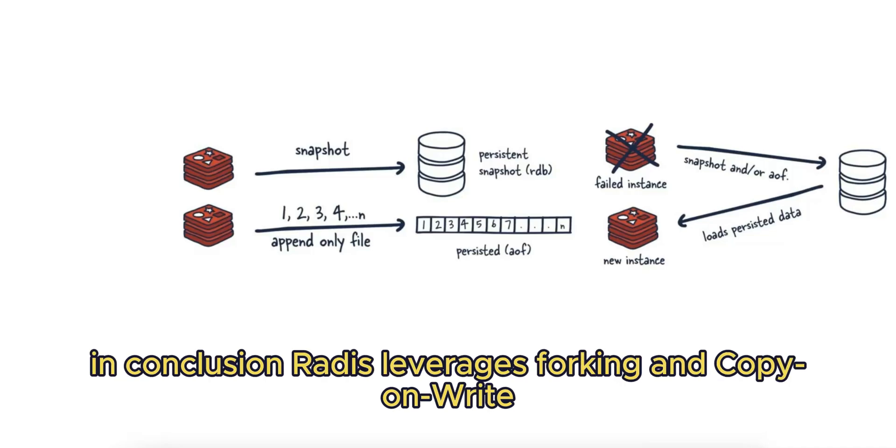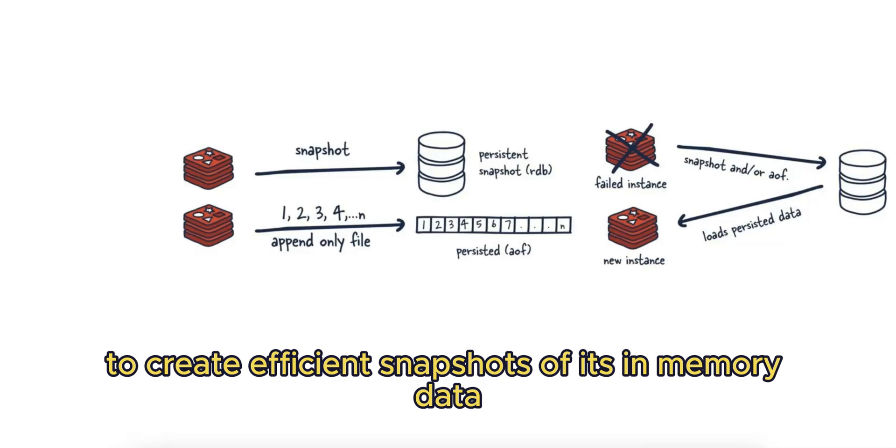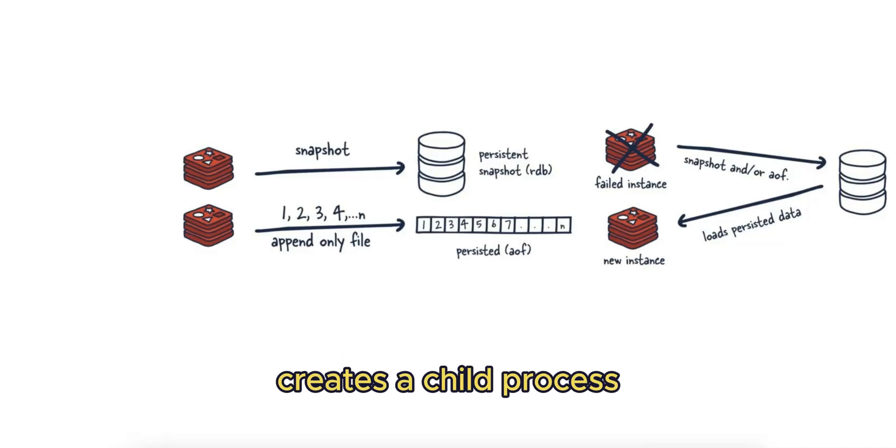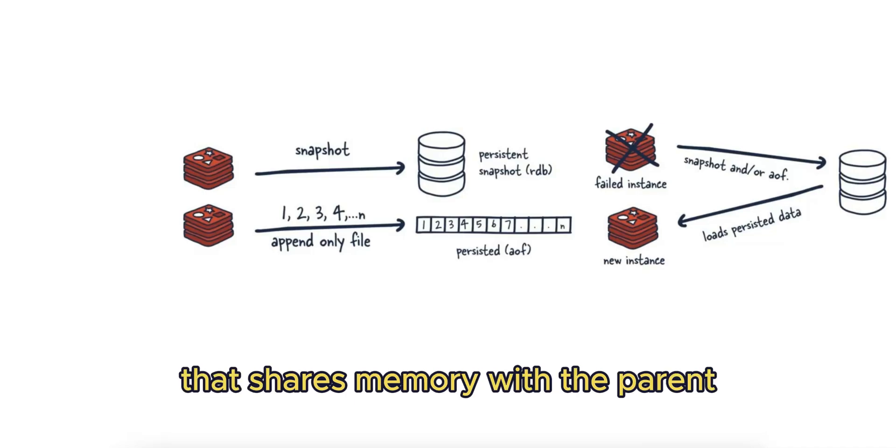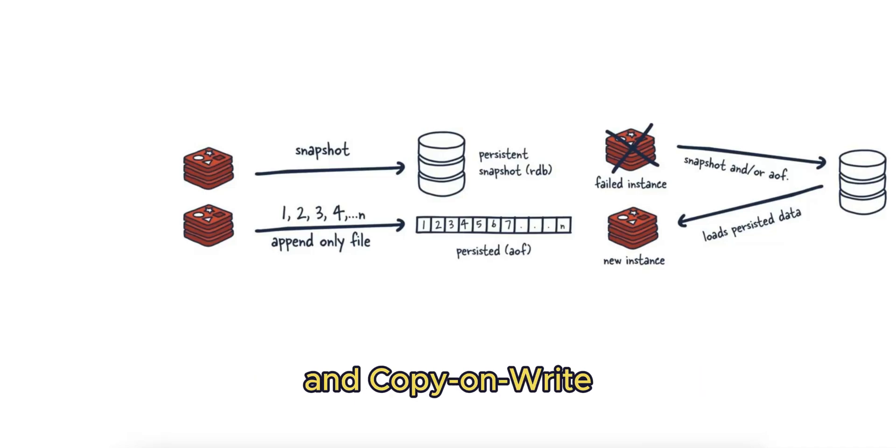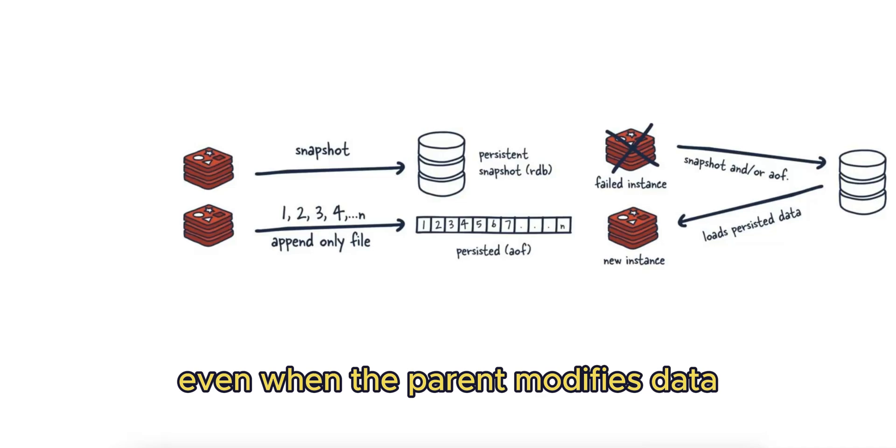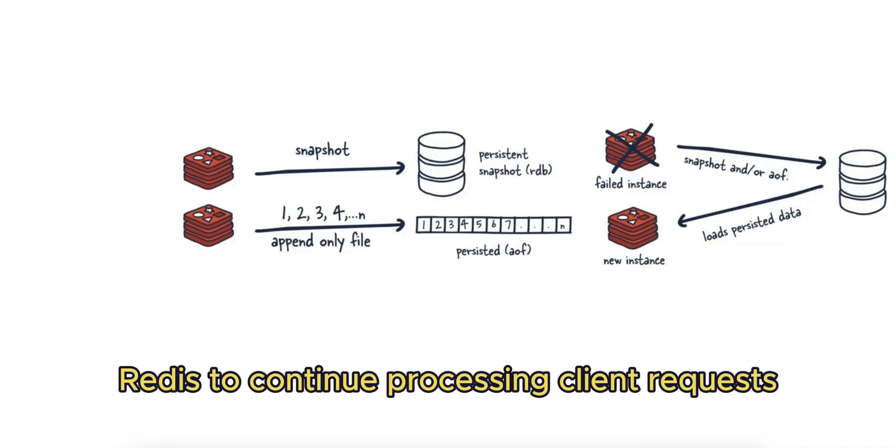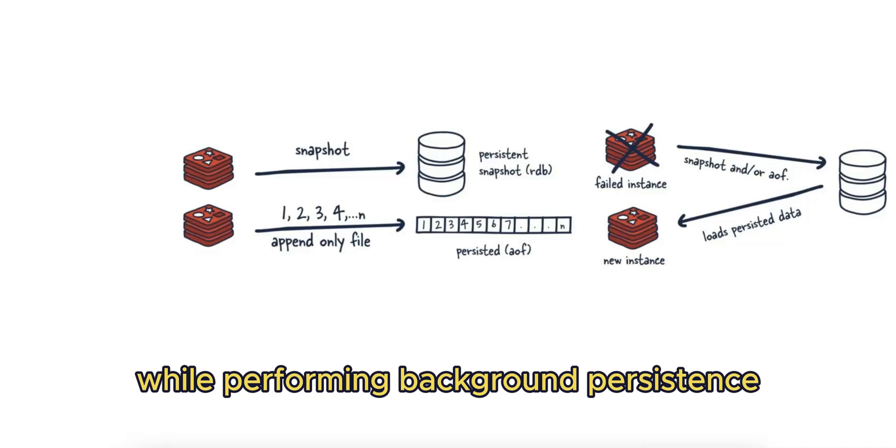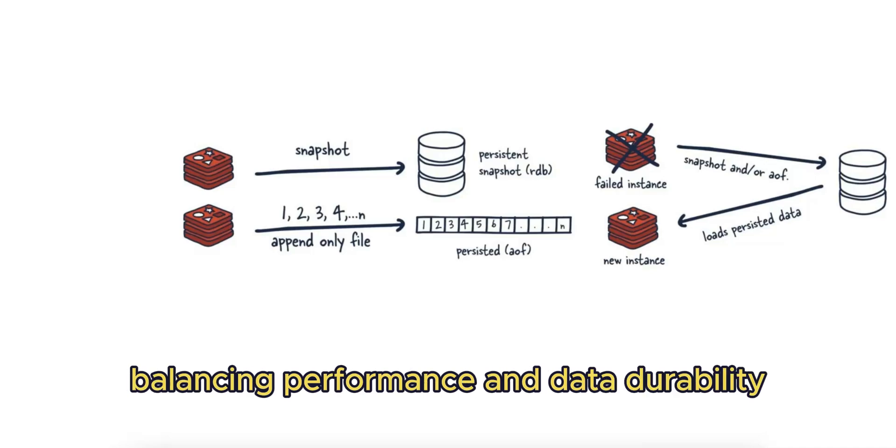In conclusion, Redis leverages forking and copy-on-write to create efficient snapshots of its in-memory data for persistence. Forking creates a child process that shares memory with the parent, and copy-on-write ensures the snapshot remains consistent even when the parent modifies data. This approach allows Redis to continue processing client requests while performing background persistence, balancing performance and data durability.